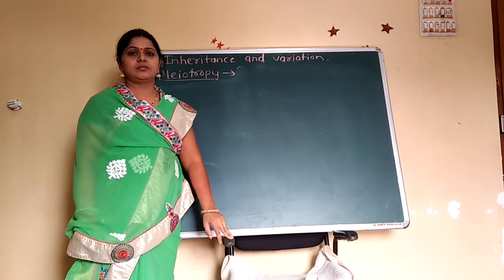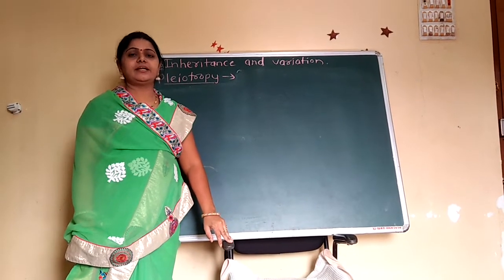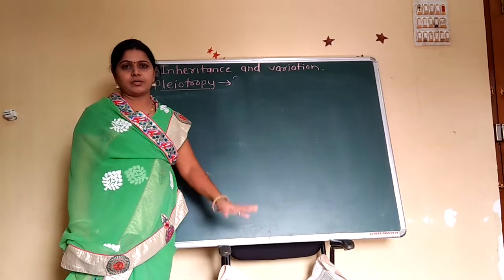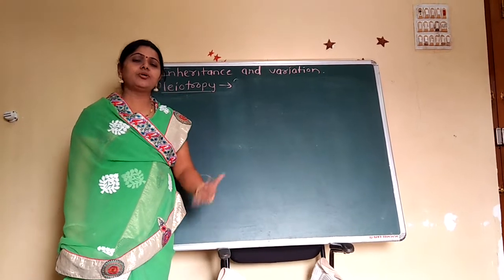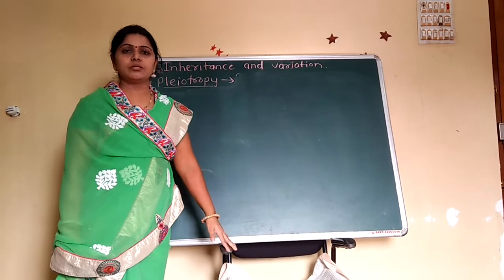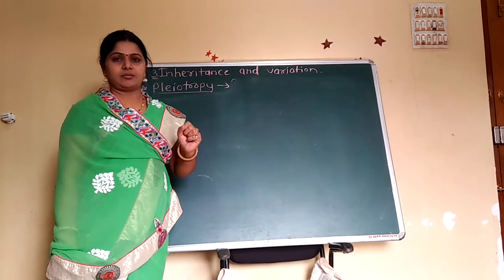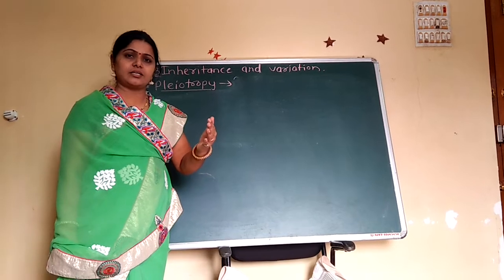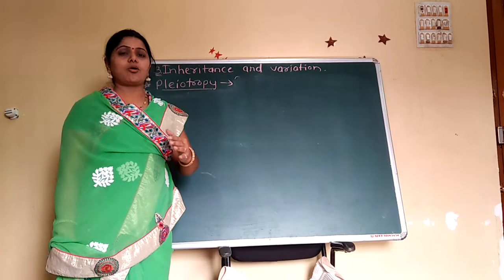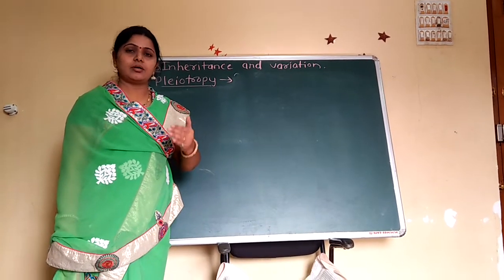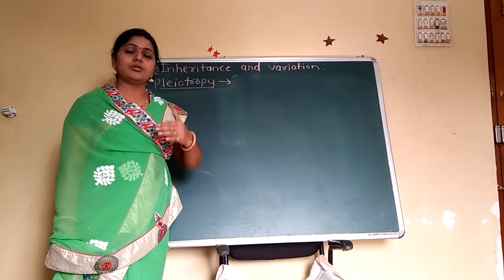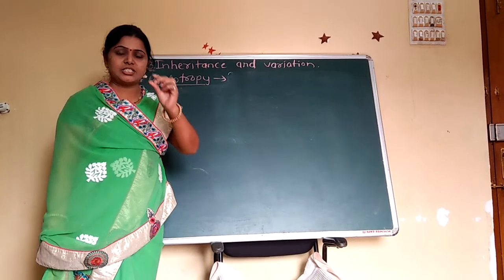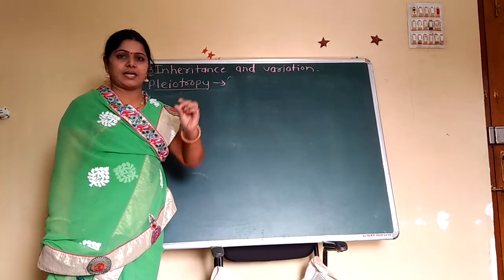Hello students. In inheritance and variation, today we see pleiotropy. But before that, we talked about one gene controlling one character. We all know, according to Mendelian principles, the unit of character is one gene controlling one character.